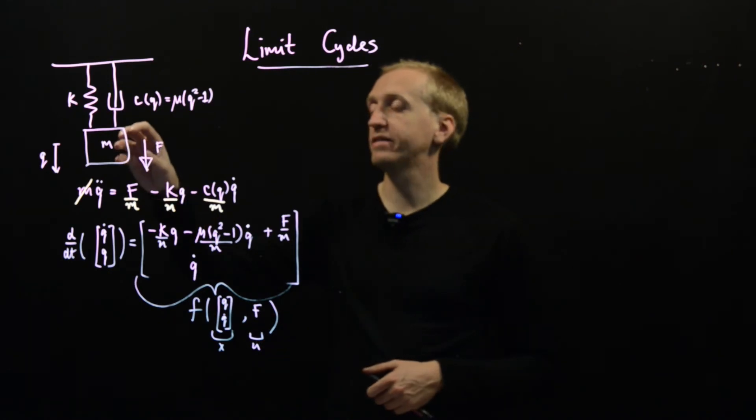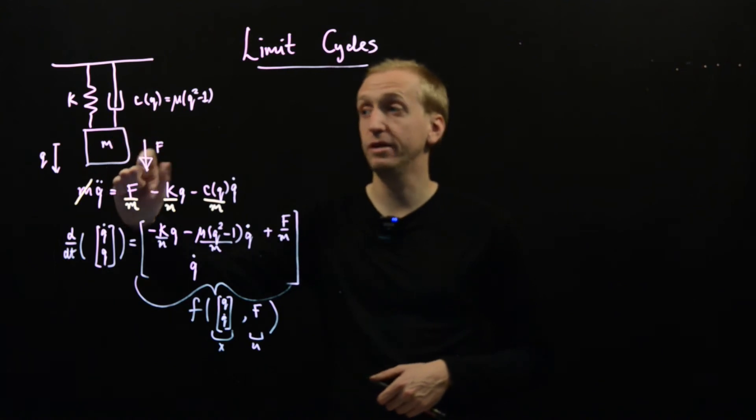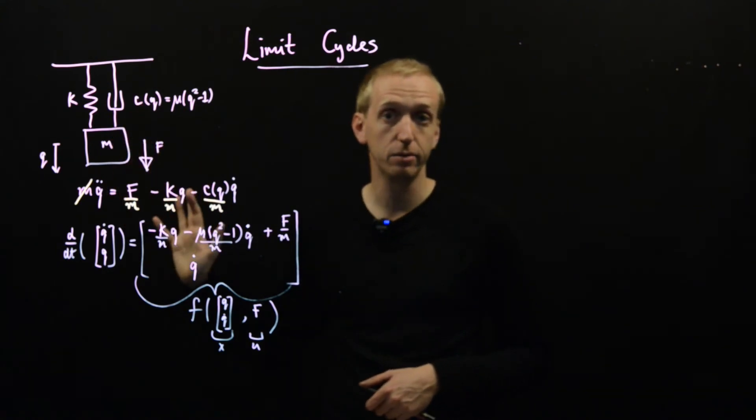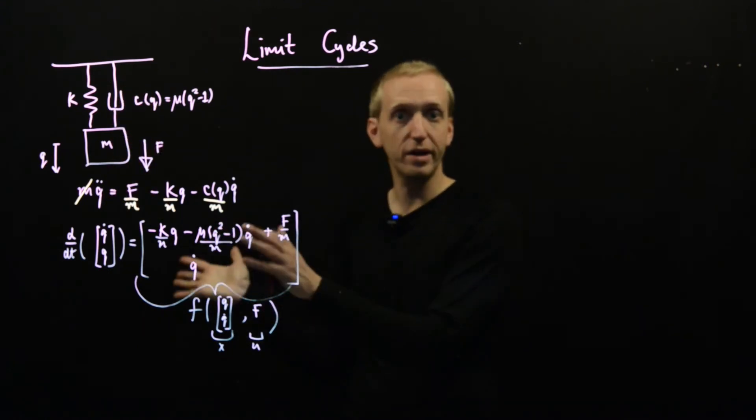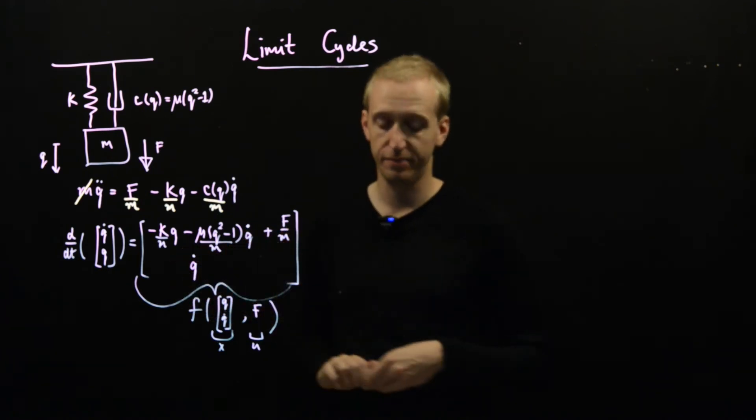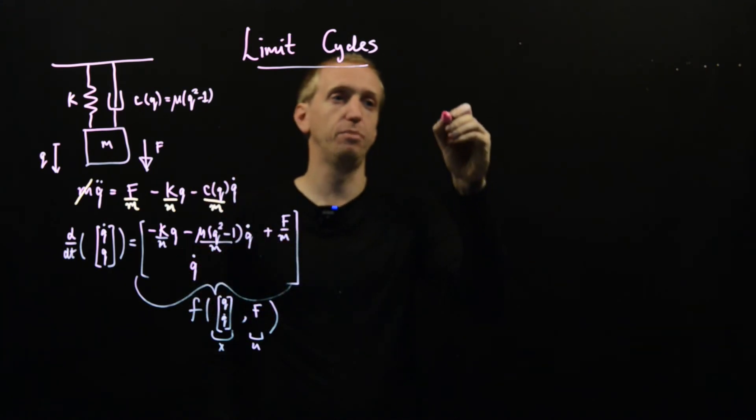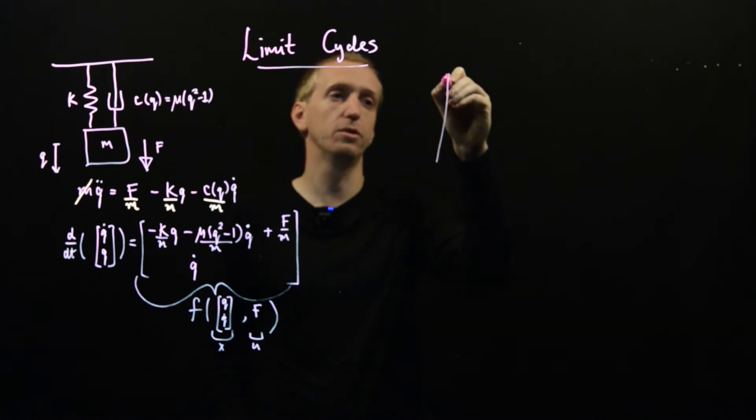So let's say we pull the mass down. If there's no damper here and we let go what's going to happen? Well this thing is just going to oscillate backwards and forwards forever with a fixed period and a fixed amplitude. So why is this not a limit cycle?